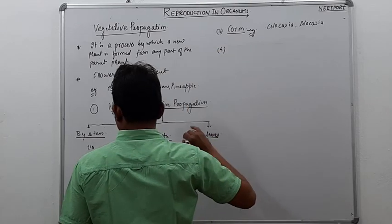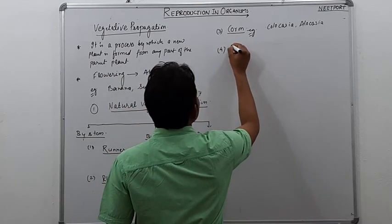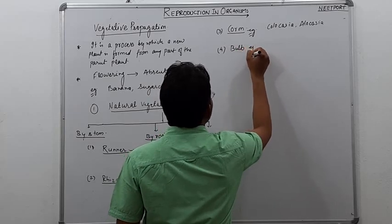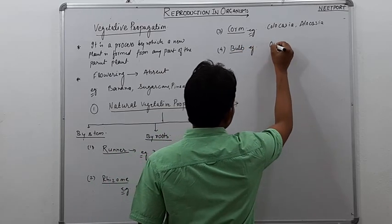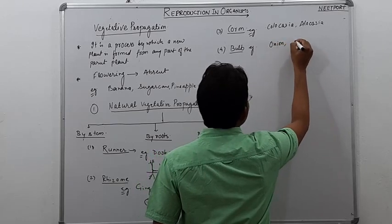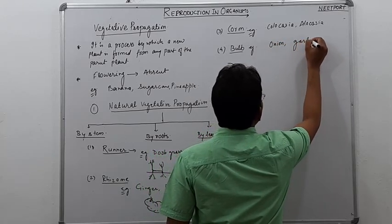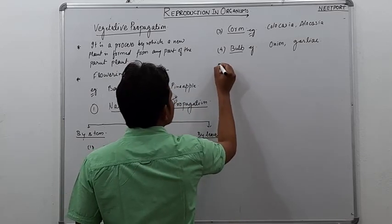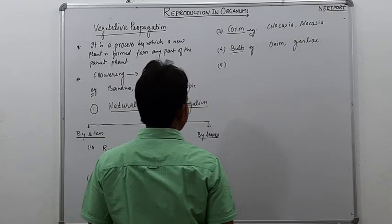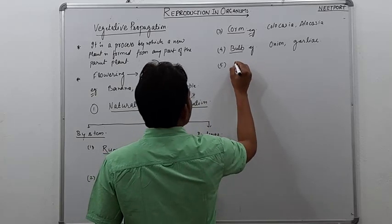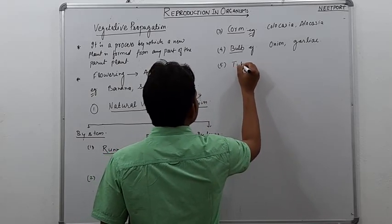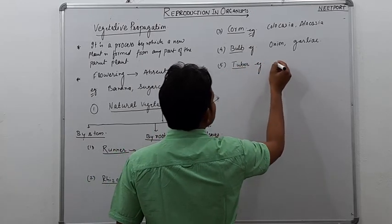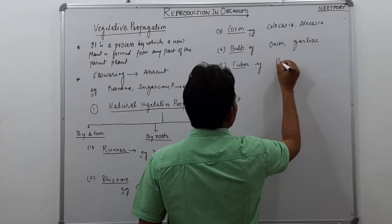Fourth is bulb. Bulb's example is onion and garlic.